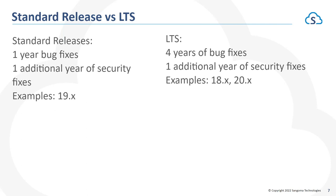Just to touch on standard releases versus LTS. Standard releases receive one year of bug fixes and one additional year of security fixes — Asterisk 19 was one of those. LTS releases receive four years of bug fixes and then one additional year of security fixes. Both Asterisk 18 and Asterisk 20 are long-term supported releases. In the case of 20, since it was just released this year, it'll go security fix only in 2026, so it's got a long life ahead of it.